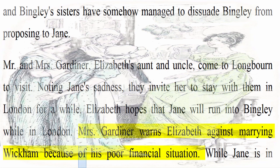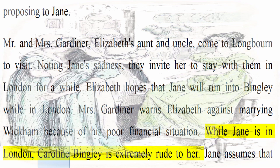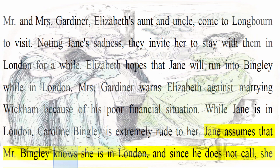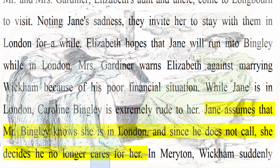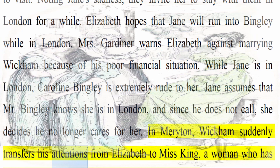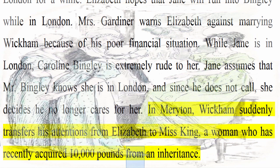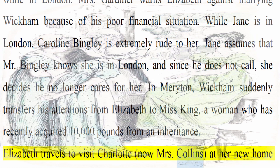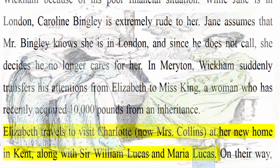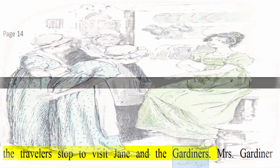While Jane is in London, Caroline Bingley is extremely rude to her. Jane assumes that Mr. Bingley knows she is in London, and since he does not call, she decides he no longer cares for her. In Merriton, Wickham suddenly transfers his attentions from Elizabeth to Miss King, a woman who has recently acquired £10,000 from an inheritance. Elizabeth travels to visit Charlotte, now Mrs. Collins, at her new home in Kent, along with Sir William Lucas and Maria Lucas. On their way, the travellers stop to visit Jane and the Gardiners. Mrs. Gardiner criticises Wickham's change of affections, but Elizabeth defends him.